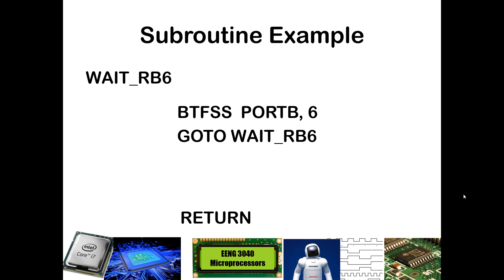One important thing to note: you do not want to put a CALL wait_RB6 inside the loop. Instead, use a GOTO, because you don't know how many times this might happen. If the switch isn't pushed for a few seconds, the check runs on the order of nanoseconds — thousands or millions of times. If you kept calling wait_RB6 each iteration, you'd fill up the stack, which only has so much memory. With a GOTO you're simply going back, not consuming stack space. This also illustrates that the same label can be used as both a CALL target and a GOTO target.